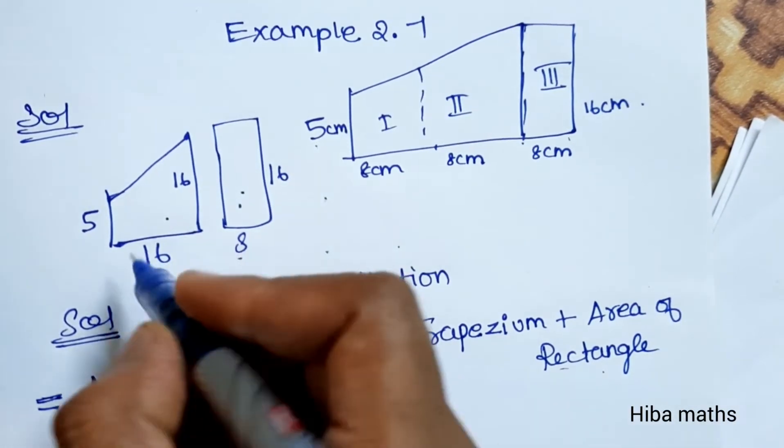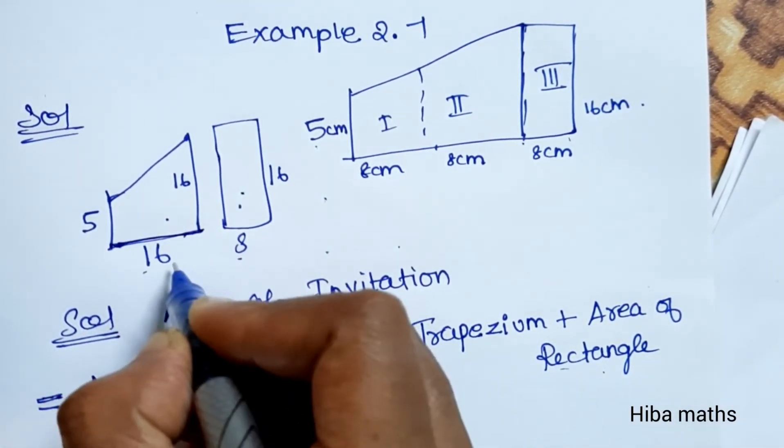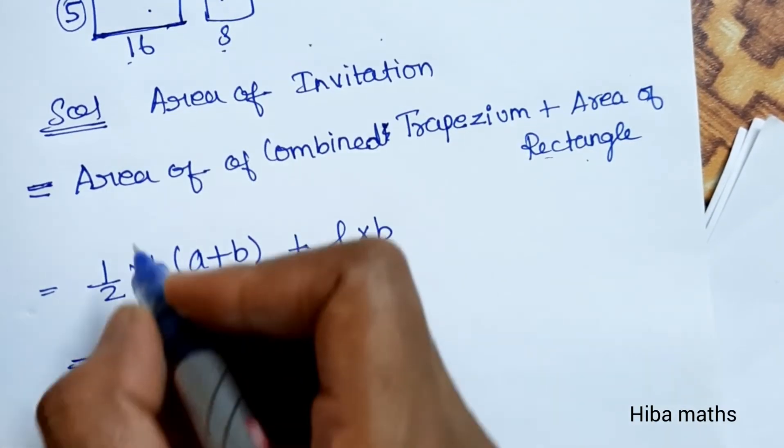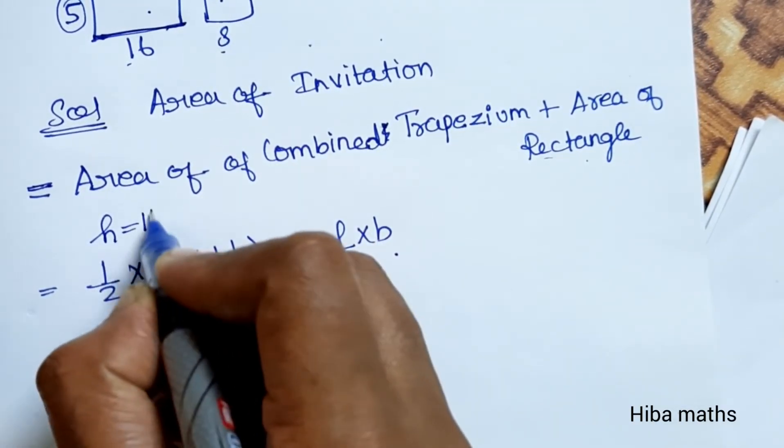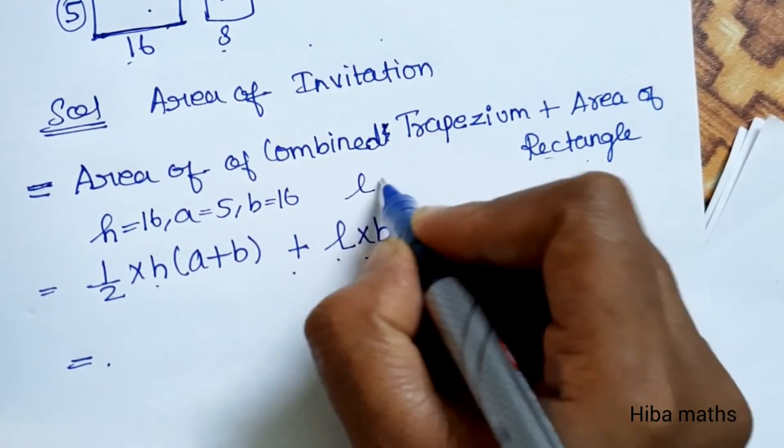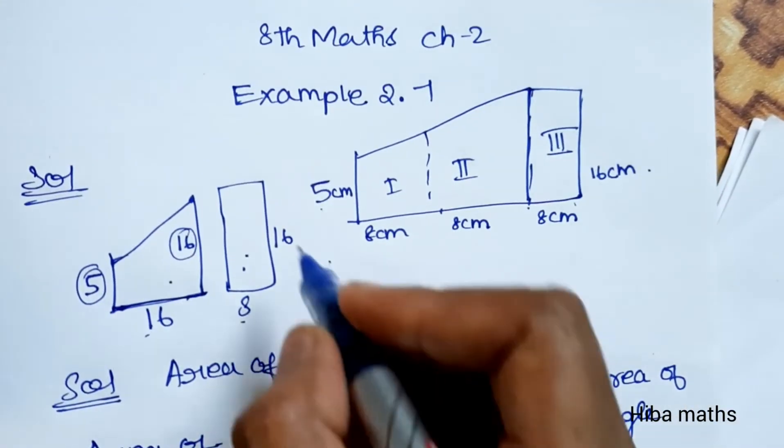Now, H, A, and B are for the trapezium, and L and B are for the rectangle. H is equal to 16, A is equal to 5, B is equal to 16. For the rectangle, length is equal to 16 and breadth is equal to 8.